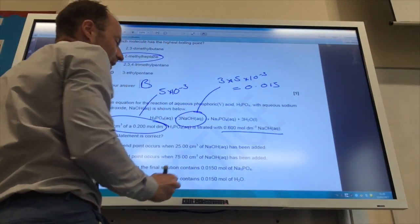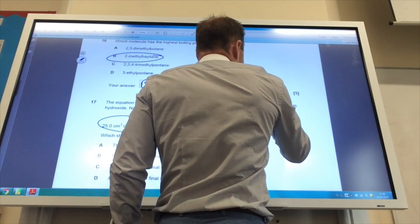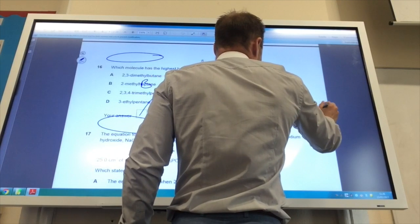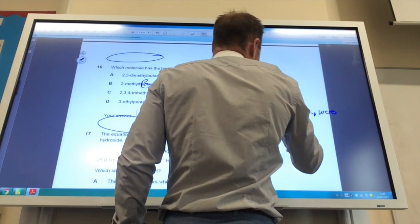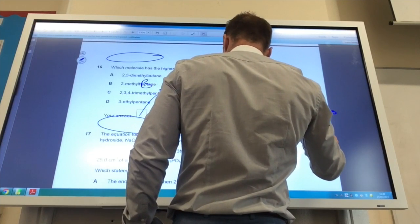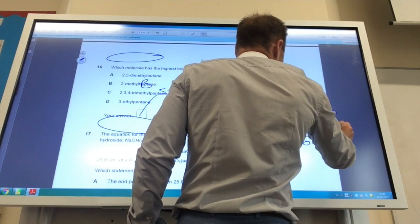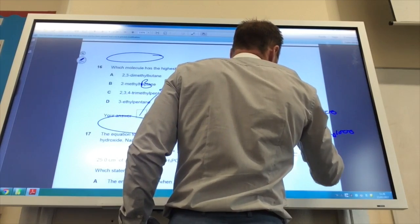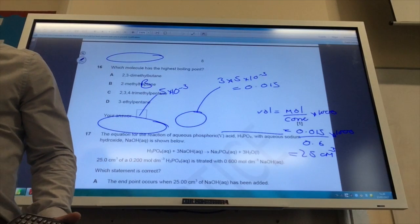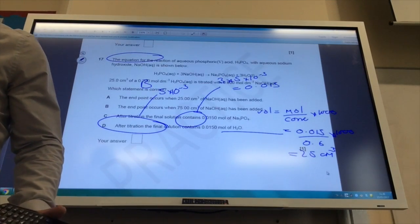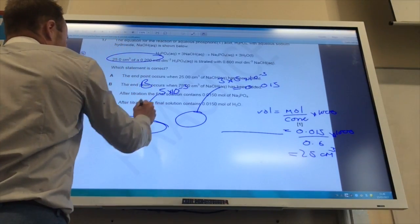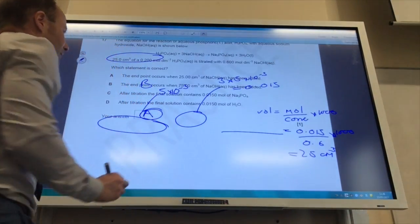of sodium hydroxide, so we know the volume equals moles divided by concentration times 1,000. If you do that, you've got 0.015 divided by 0.6 times 1,000, which gives you 25 centimeters cubed. So the answer is going to be A.